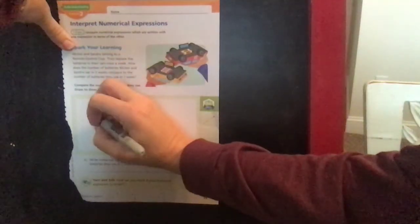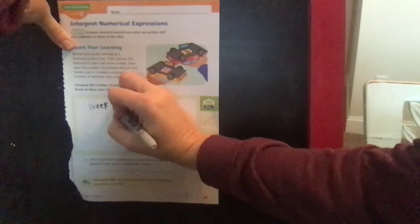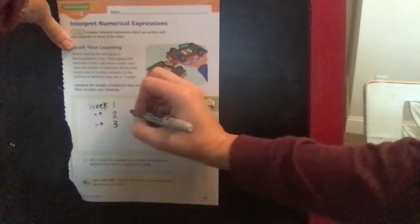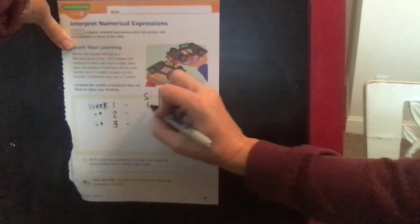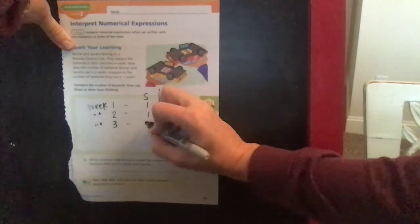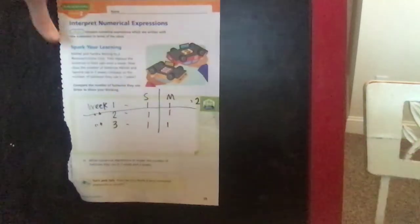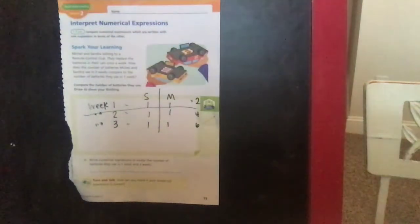So they have a club, they replace the batteries in their car once a week. So on week one, week two, and week three, Sandra and Michelle each do it one time each week. Week one they're doing two batteries, week two there's four, and week three of course there would be six.